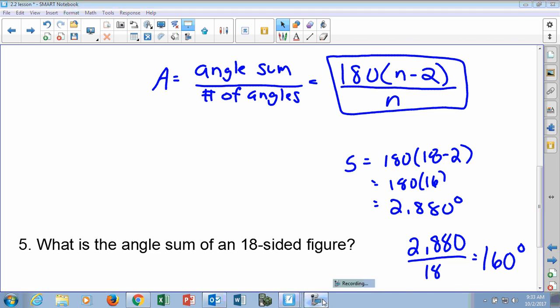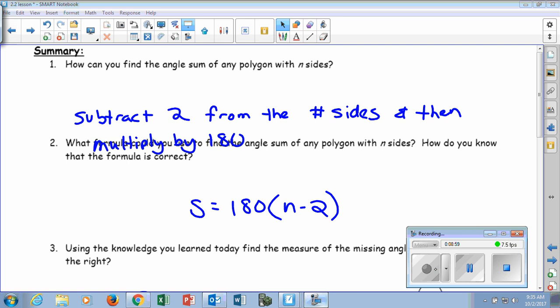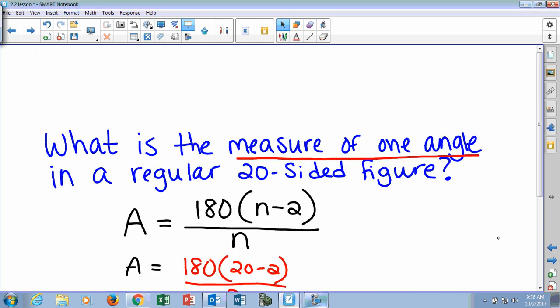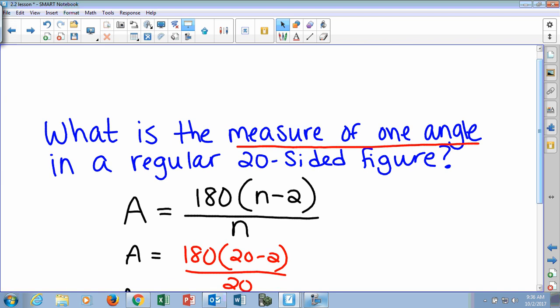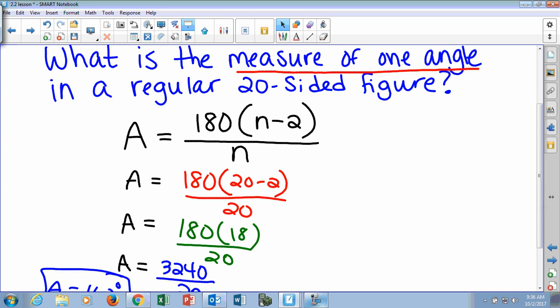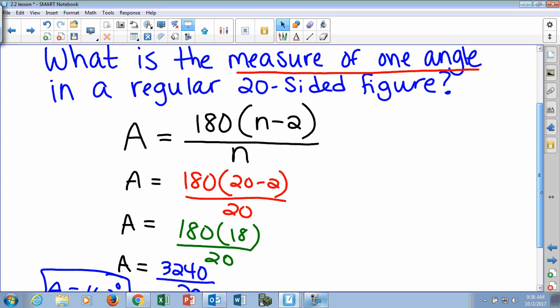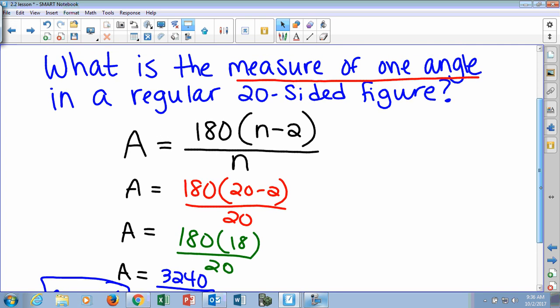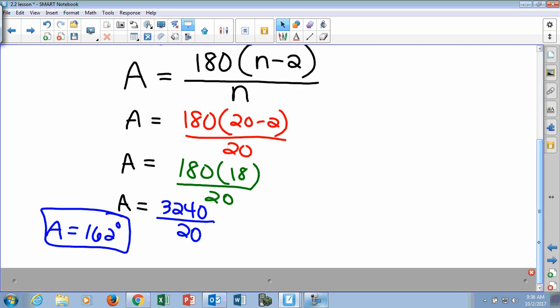So let me unfreeze this here because my board is frozen. So remember, here's the formula. So you're going to plug in a 20 where you see n. So 180 times 20 minus 2 is 3,240. And when you divide it by 20, you get, drum roll, 162 degrees. How many people got 162 degrees? Excellent. That's almost everybody.